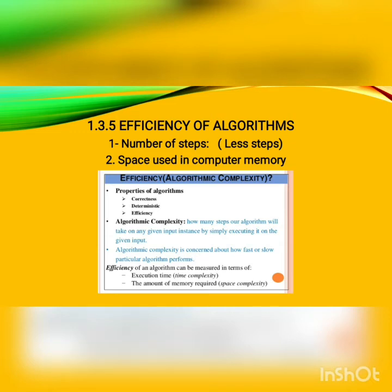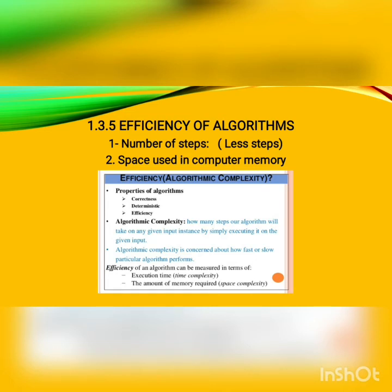Deciding which solution is better depends upon the efficiency of the available algorithms. The efficiency of an algorithm is measured on two metrics. First, the number of steps — an algorithm is considered more efficient if it takes fewer steps to reach the result. Second, space used in computer memory — an algorithm using less memory space is considered more efficient. It is possible that one algorithm takes less memory but has more steps, while another takes more memory but fewer steps, creating a trade-off between steps and memory consumption.